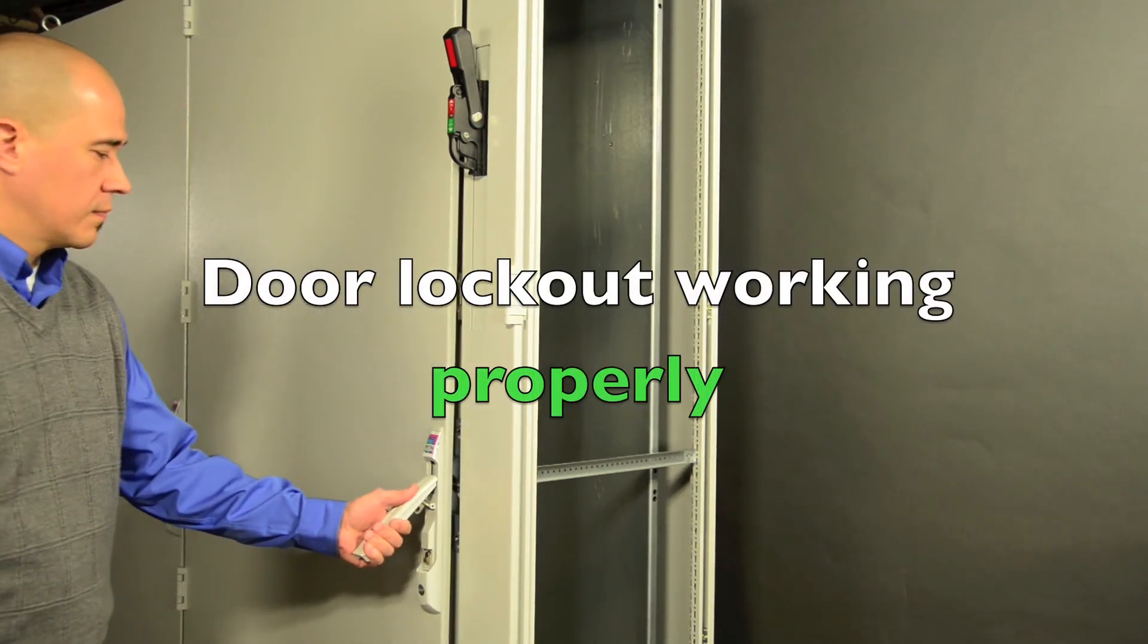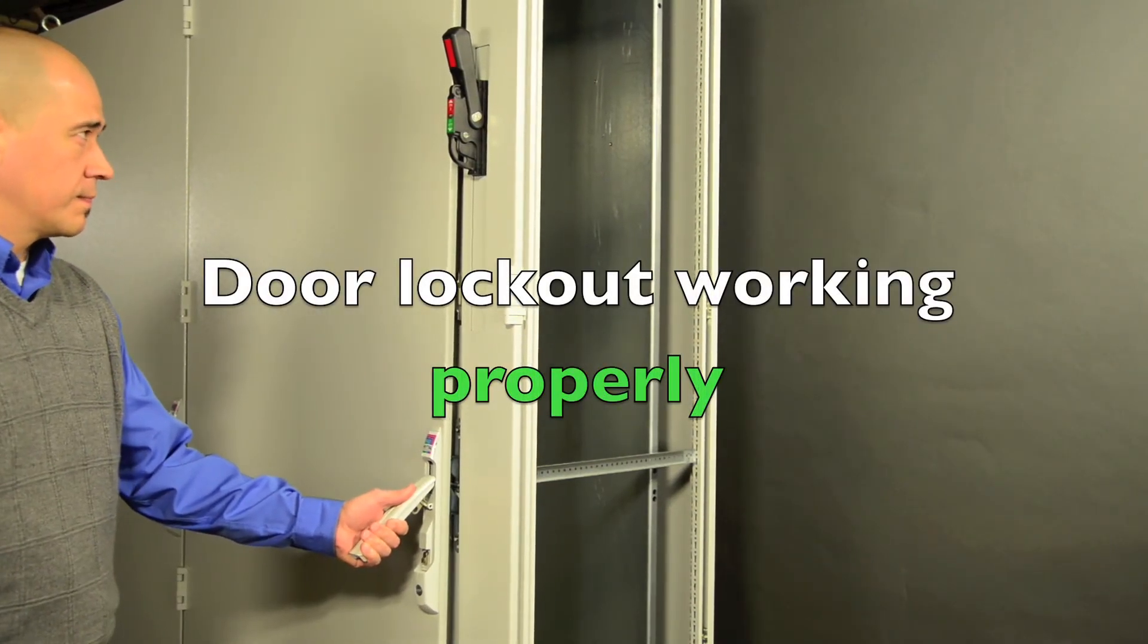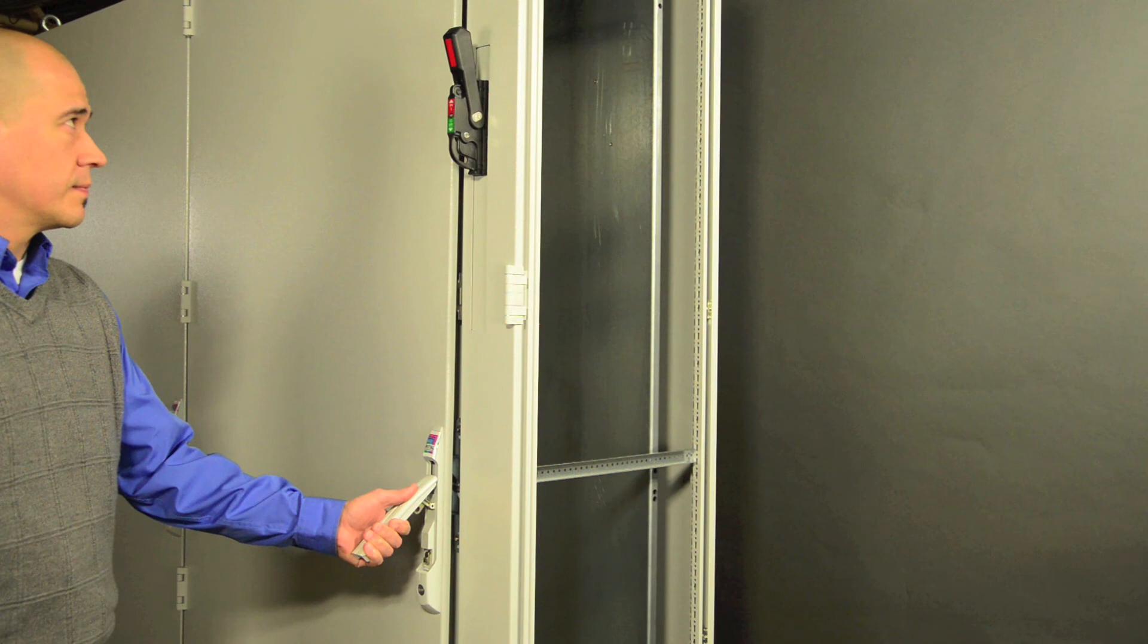Attempt to open the main door. The defeater lever should engage the door catch and prevent the door from opening. The assembly is working properly.